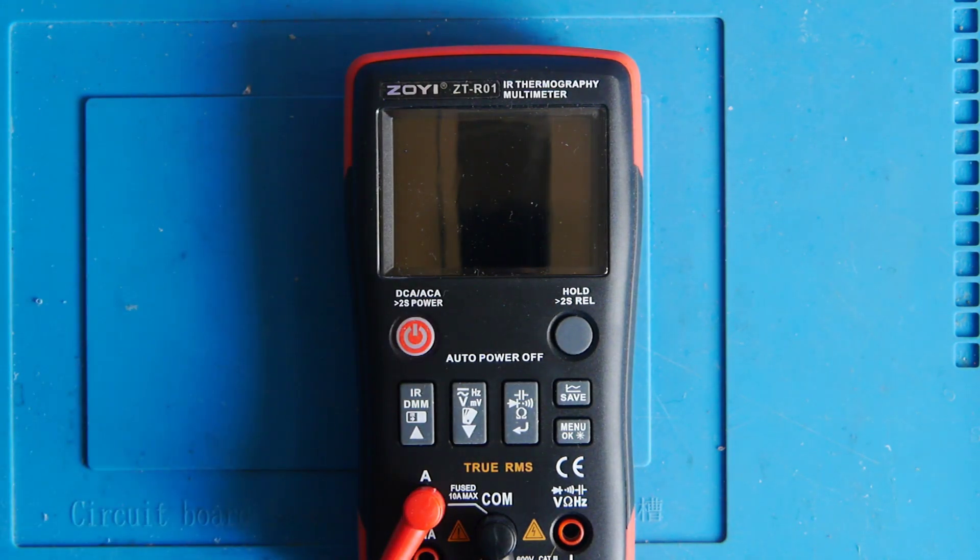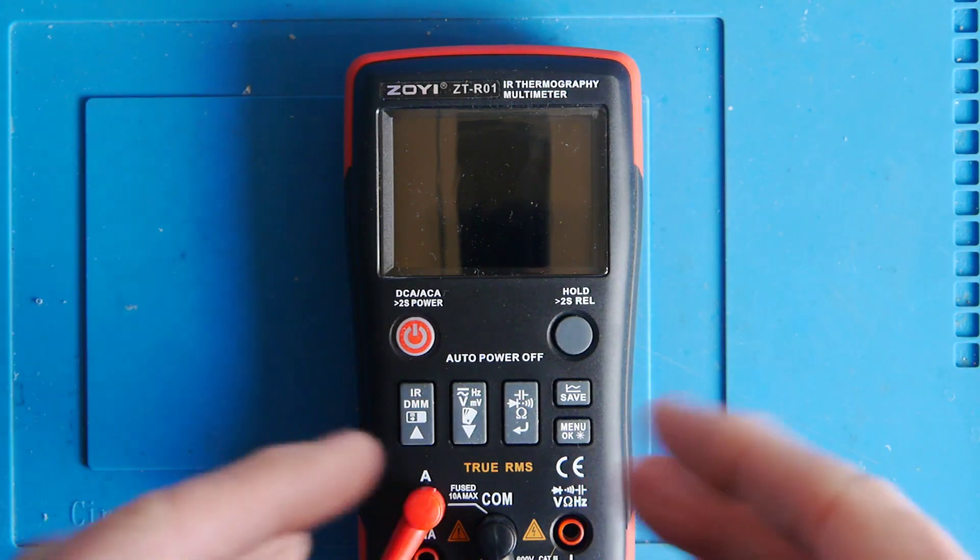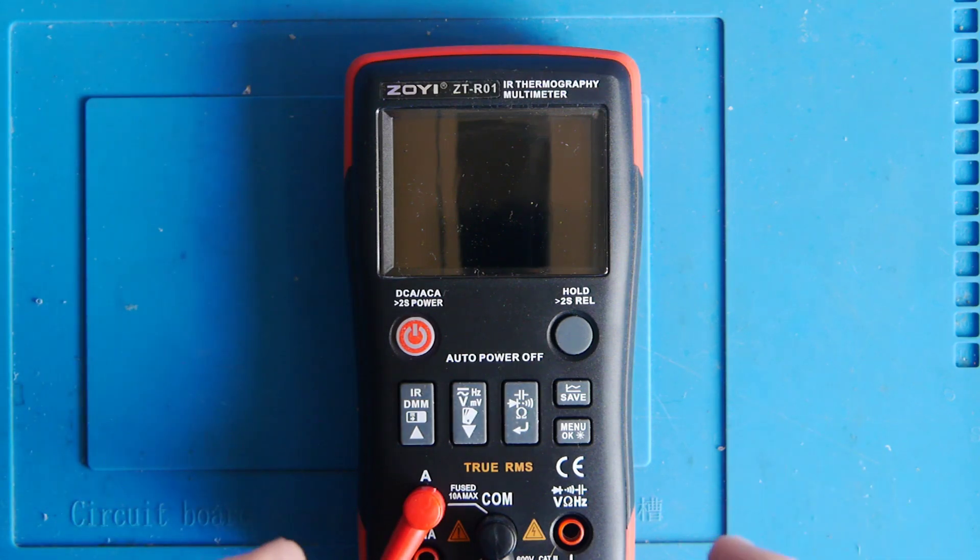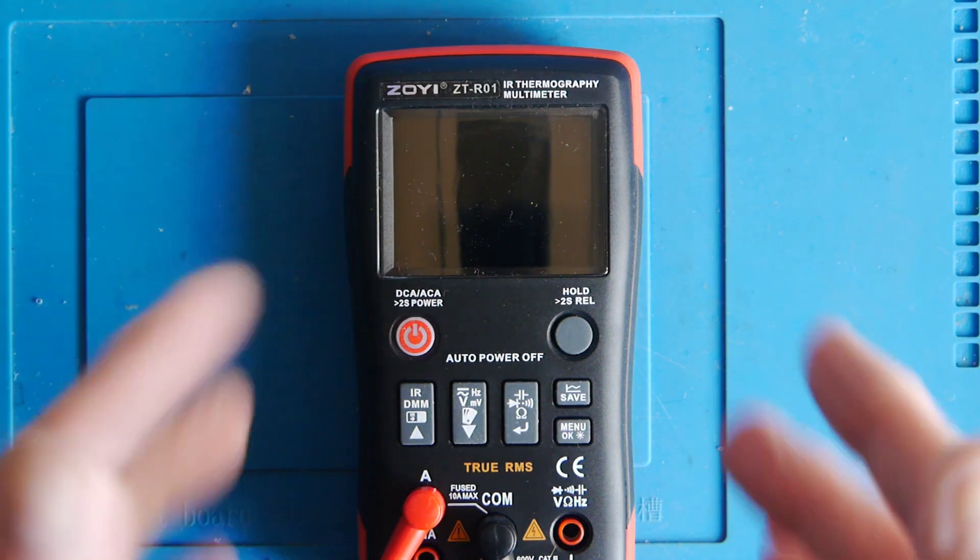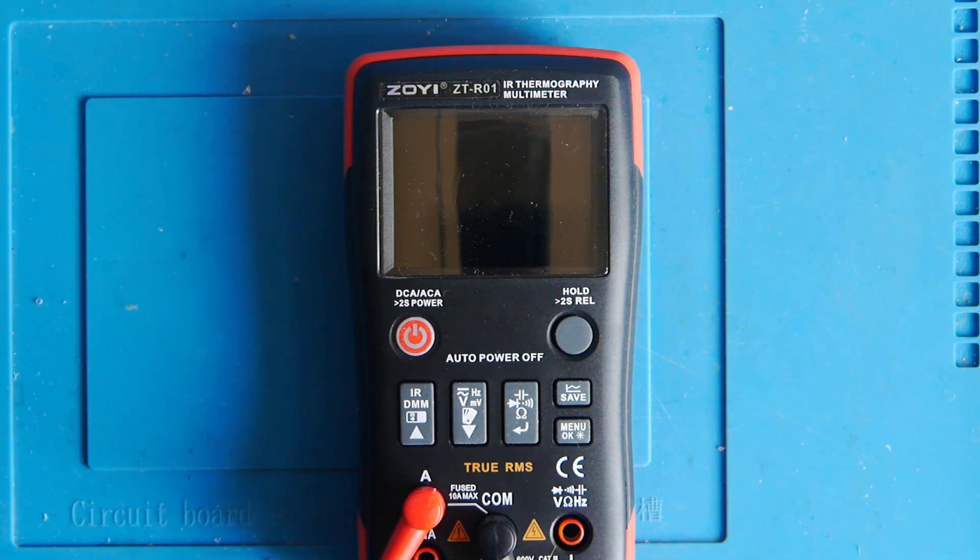So yeah, that's the Zoyi ZT-R01 infrared thermography multimeter. It's a nice bit of kit. I've been doing less and less multimeter reviews because very often they're all the same, but the scope meters have been useful and I still use the Zoyi scope meter quite a lot. I think this is potentially very handy if you're trying to fault-find. You can look at the temperature of things, but you can also use it on circuit boards and it responds nice and quickly.